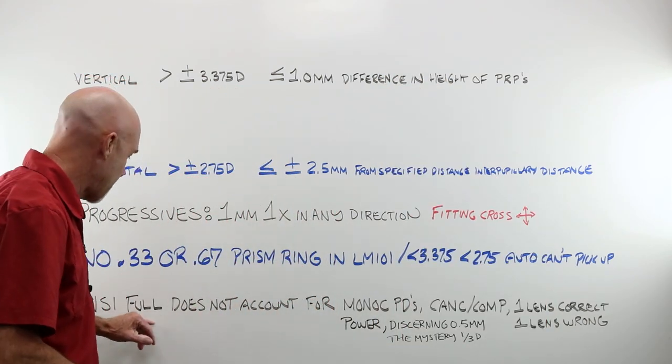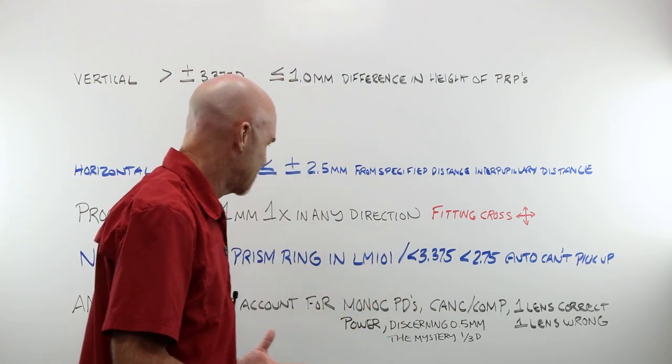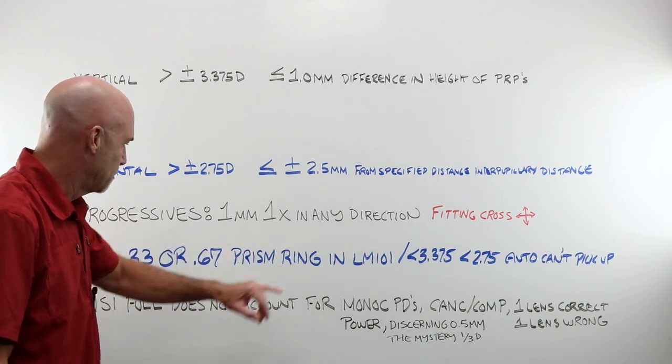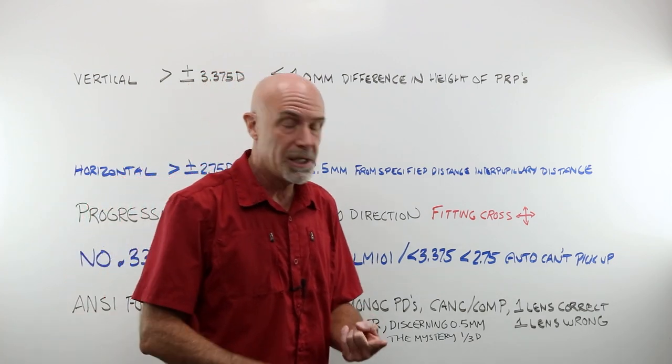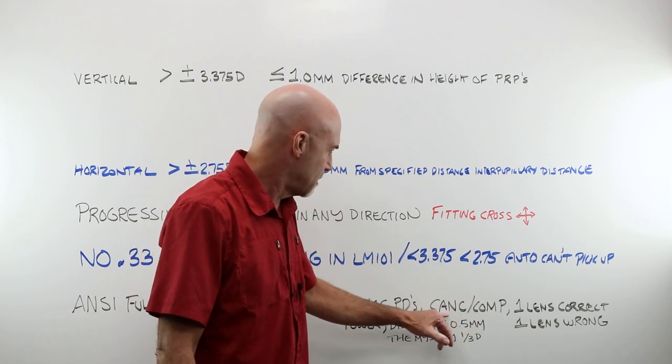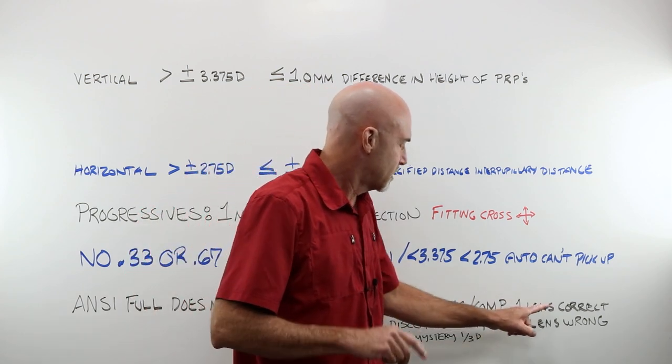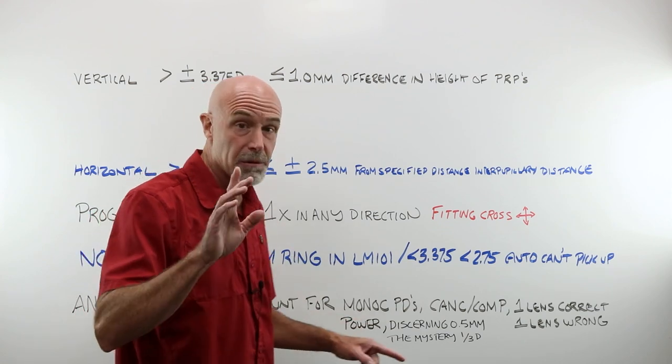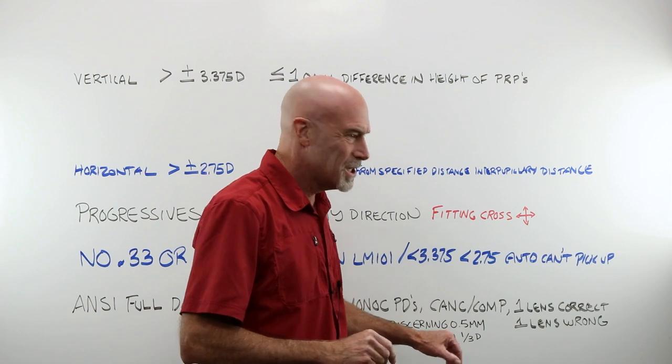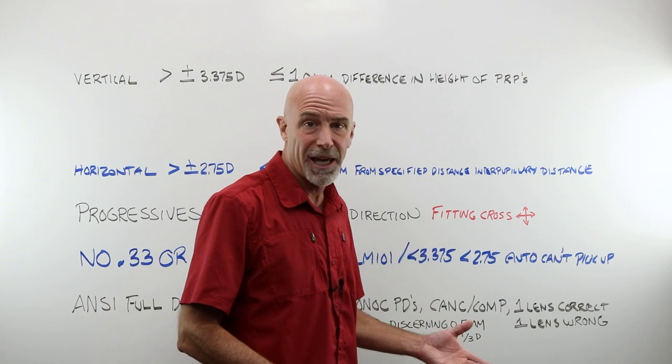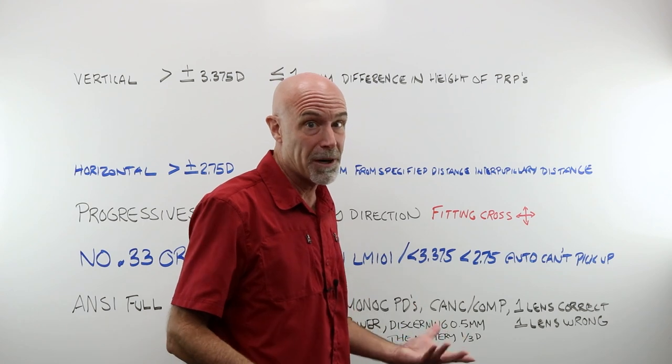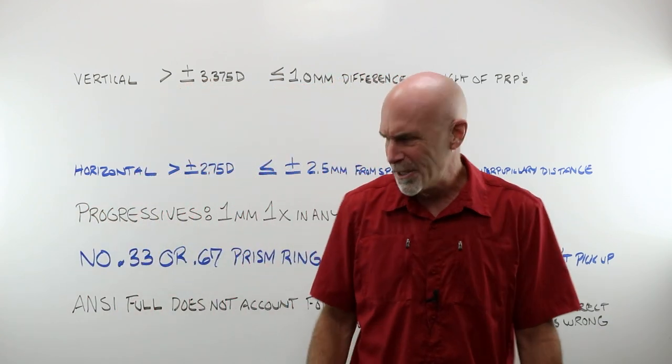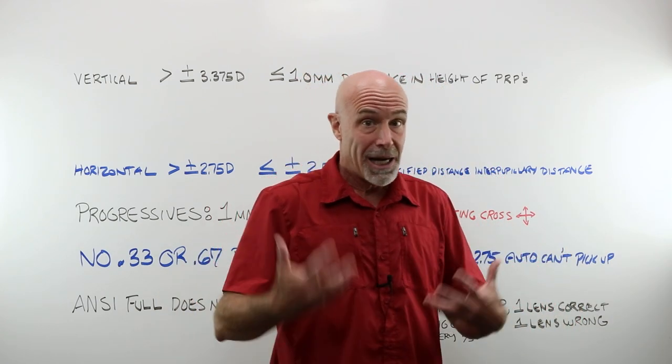ANSI Full, you probably don't have access to that, but ANSI Full sort of kind of pretends it has some kind of directions or instructions on how to do this. But let me point out that along with the missing 0.33 and 0.67 prism rings in the lens meter, it doesn't account in any way for monocular PDs. It doesn't seem to, and I may be interpreting this incorrectly, but it doesn't take into account canceling and compounding. It doesn't take into account if you had one lens that was absolutely perfect and one lens that's way off. It doesn't take into account higher powers, and I'm about to show you that in just a second. It assumes that we can discern a half a millimeter when in fact we probably can't. A lens meter dot, the ink pen dot that you put on the lens is probably about a millimeter wide. PD sticks are graduated in one millimeter steps. And of course we have the mystery one third diopter, and that's just part of why the ANSI guidelines don't really work.